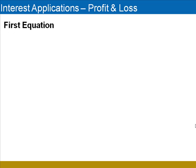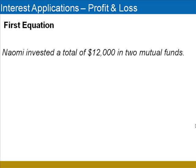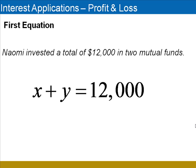We begin by finding a first equation for our system, and it comes from the fact that we know she invested a total of $12,000. That means the amount invested in the first account plus the amount in the second mutual fund have to total $12,000, or X plus Y equals $12,000.